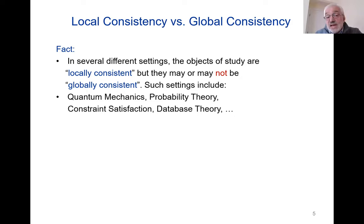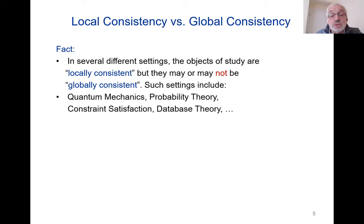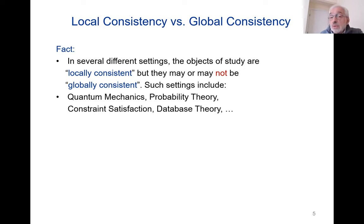So, the quantum mechanics situation where you have the phenomenon of contextuality: things are locally consistent, globally inconsistent, and that gives you a quantum advantage. In probability theory, we have things like the coupling method, and situations where we have probability distributions that we're trying to realize as restrictions of one master probability distribution. In constraint satisfaction, many algorithms try to detect satisfiability by propagating local consistency. And closer to home, which is the topic of this talk, is database theory.